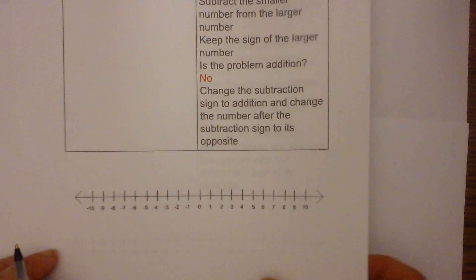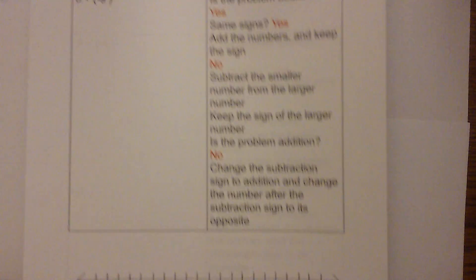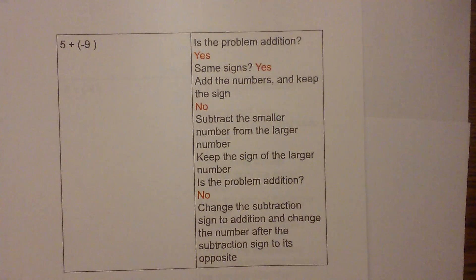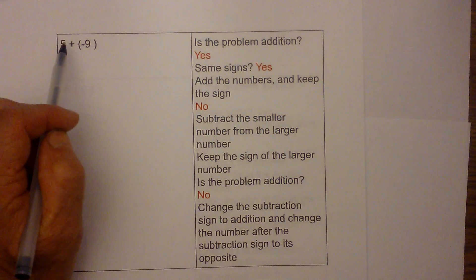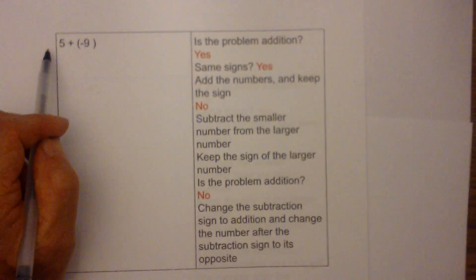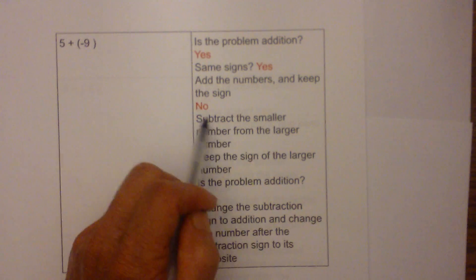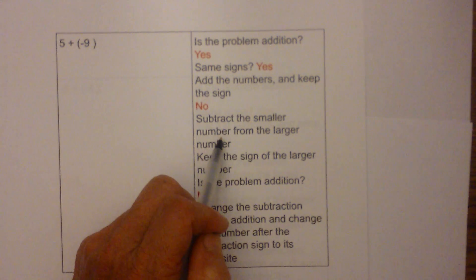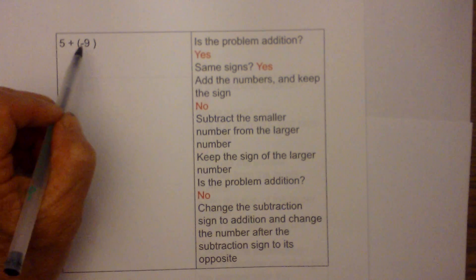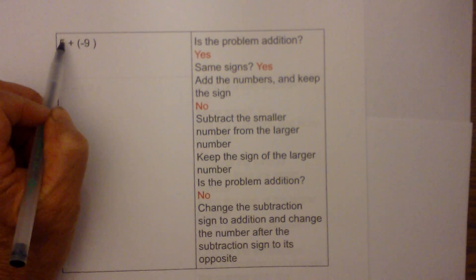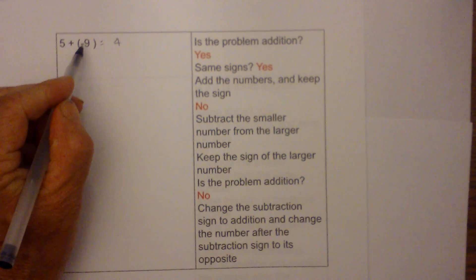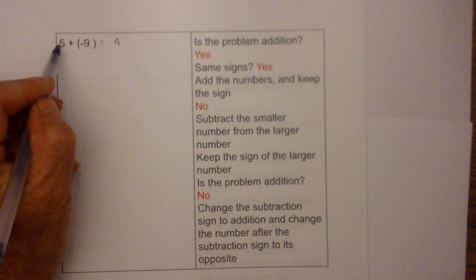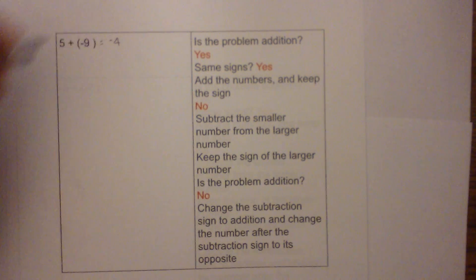Up next we have five plus a negative nine. Same rules apply. Is the problem addition? Yes. Same signs? No. Subtract the smaller number from the larger number and keep the sign of the larger number. Nine minus five is equal to four, and nine is larger than five, so the answer will be negative four.